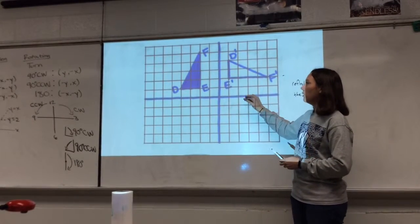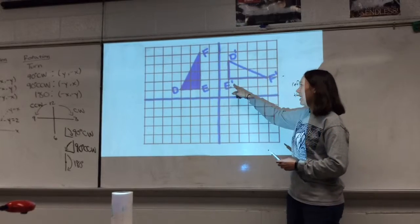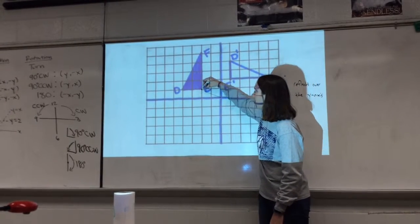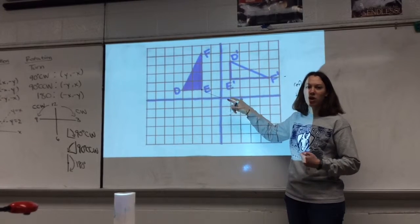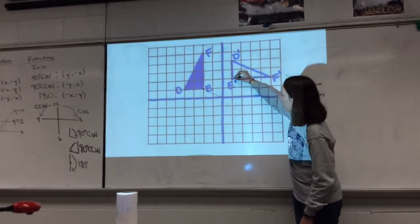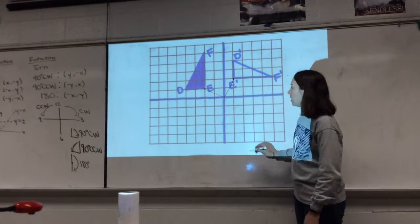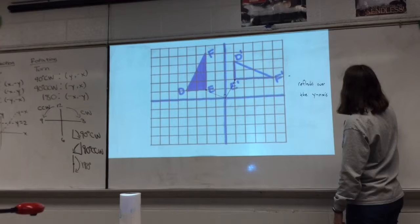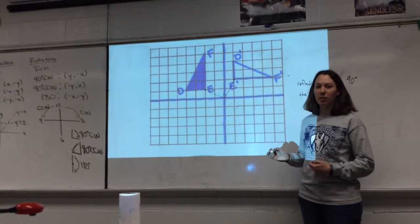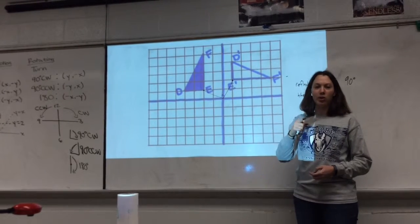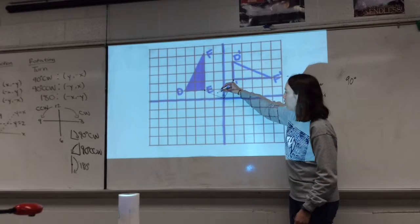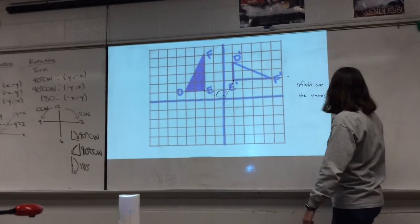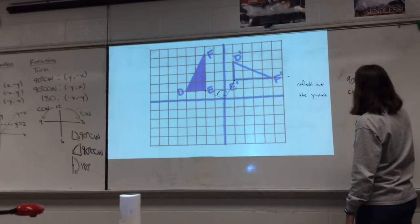Our last one is rotation. We're starting with our pre-image and rotating to our image. I'm going to pick one point from my pre-image — I'm going to pick E. I'm going to draw a line straight to the origin, since that is what our point of rotation is almost always going to be. Pick the corresponding point in the image, E prime, draw a line straight to the origin, and notice what shape that makes. In this case it makes an L, so I know it's 90 degrees. The last thing is which direction — clockwise or counterclockwise. It went from E to E prime, going the same direction as a clock. So this is a 90 degrees clockwise rotation.